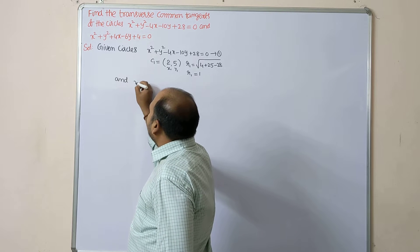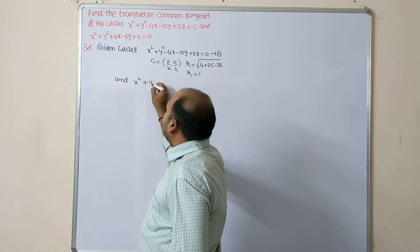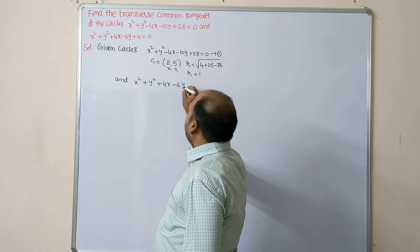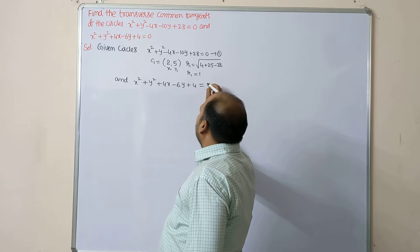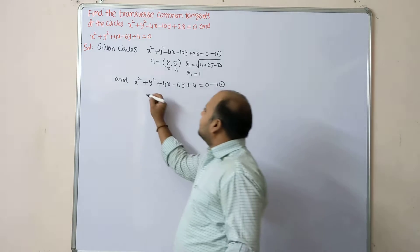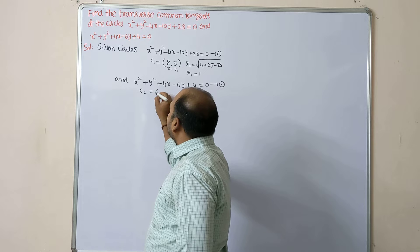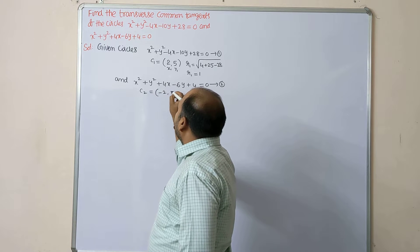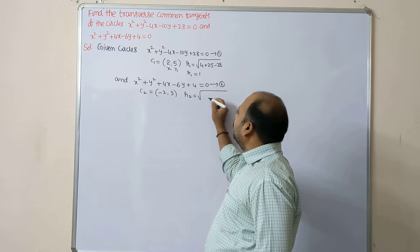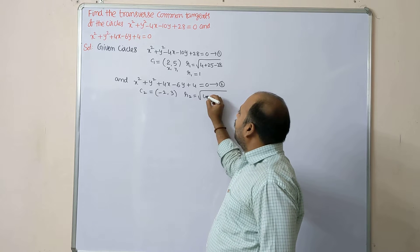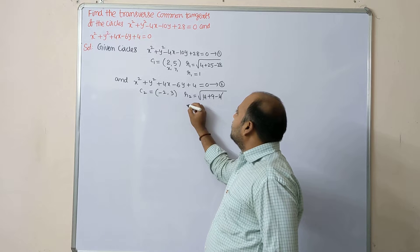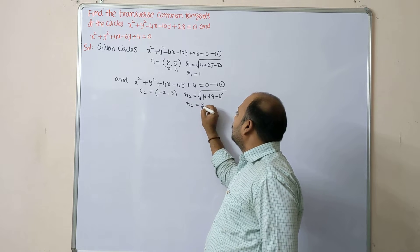Second circle equation: x² + y² + 4x - 6y + 4 = 0, equation number two. Center of second circle C2 = (-2, 3), denoted by (x2, y2). Radius of second circle r2 = √(4 + 9 - 4) = √9, so r2 = 3.